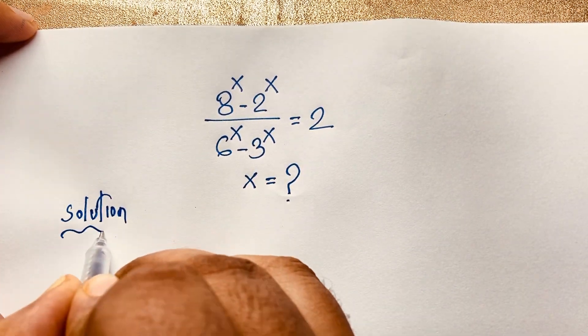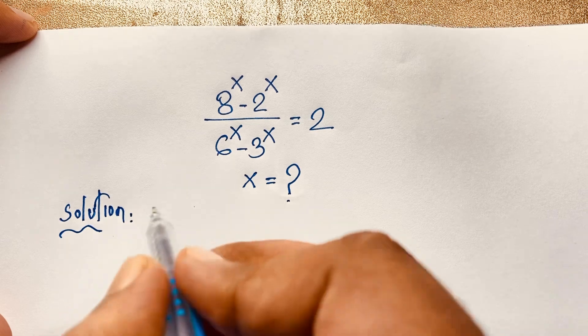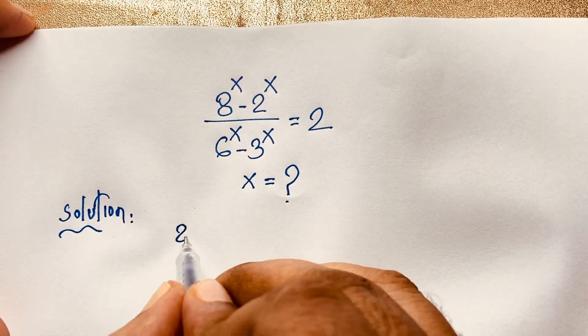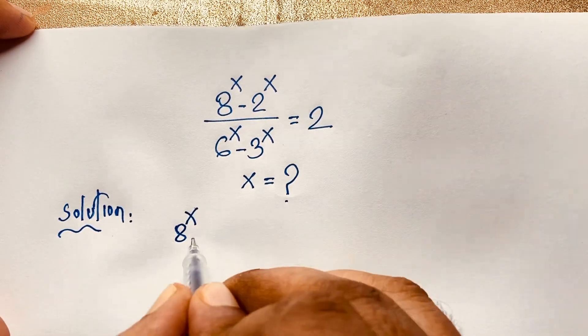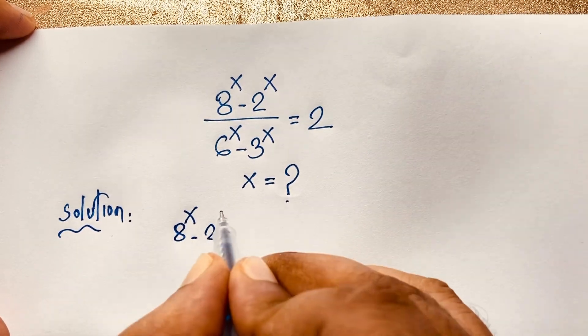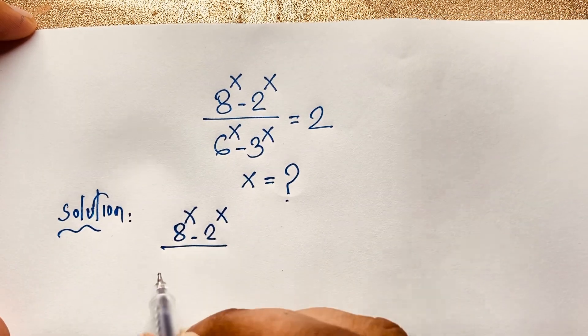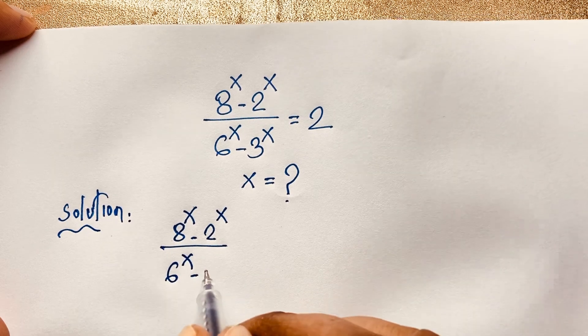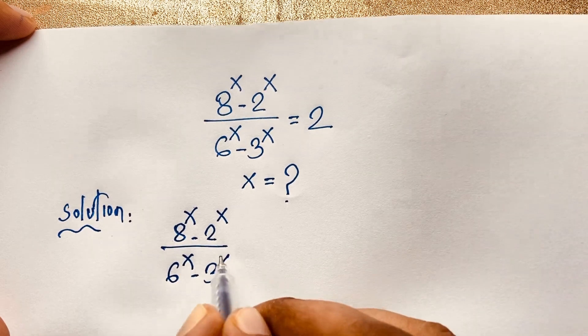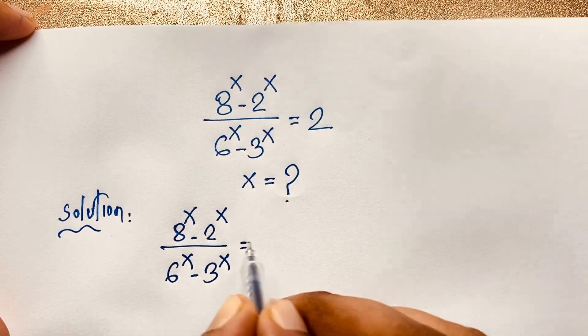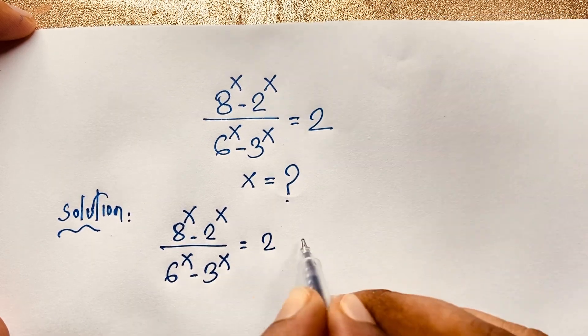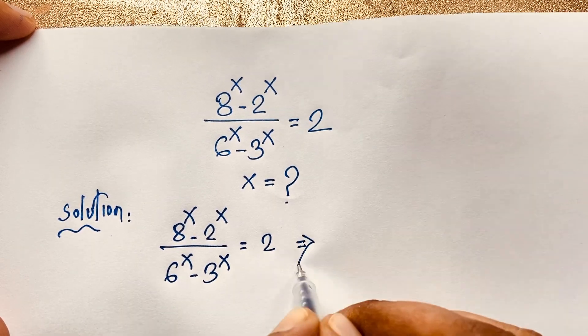Our question is: 8 to the power of x minus 2 to the power of x, over 6 to the power of x minus 3 to the power of x, is equal to 2.